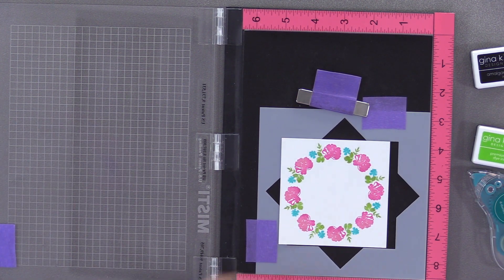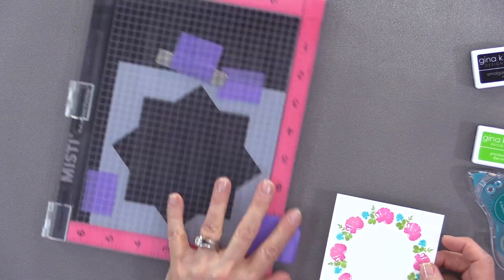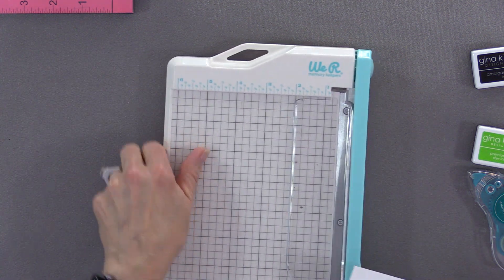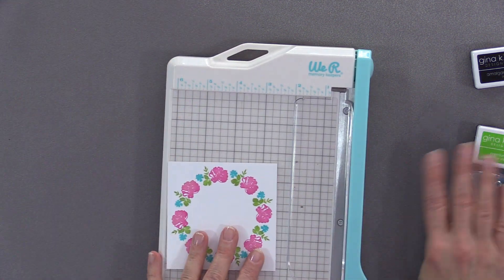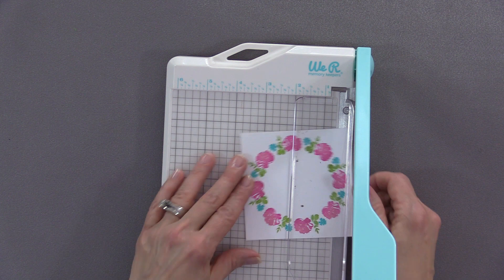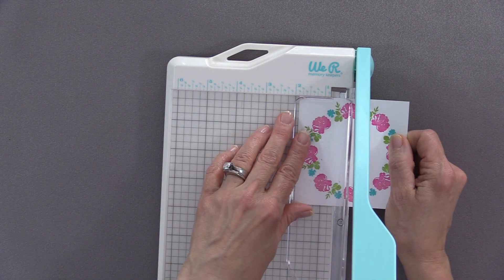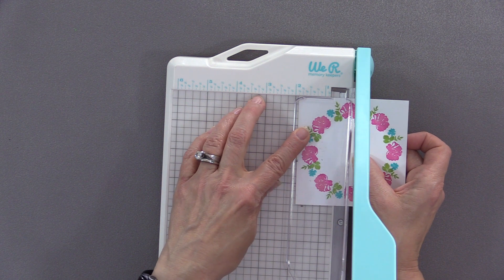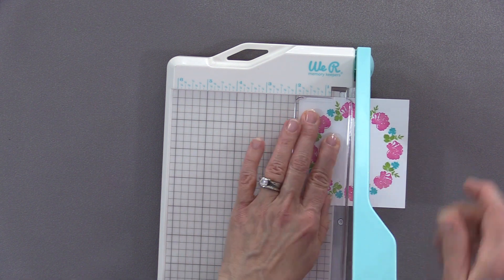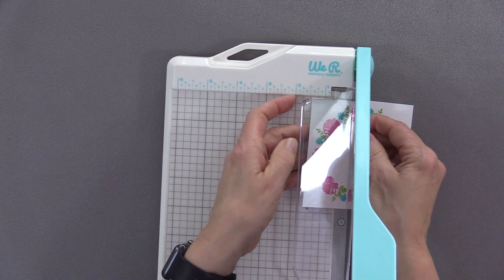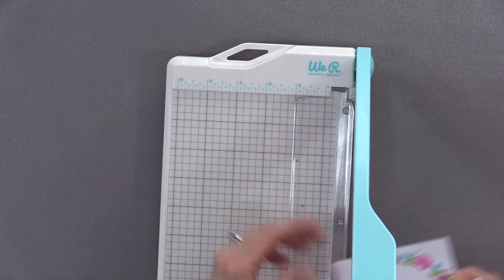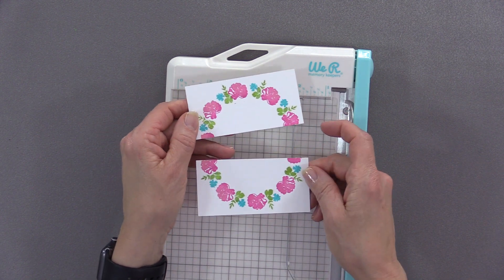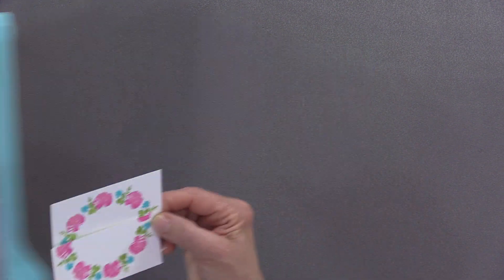Now I'm going to turn this one into an A2 size card. I have a paper cutter and I'm going to cut that at the one and seven eighths inch mark. Depending on what size wreath builder template you use, if you use the four inch template, you're going to cut it at two inches. If you use the three and three quarter inch template, then you're going to cut it at one and seven eighths of an inch.